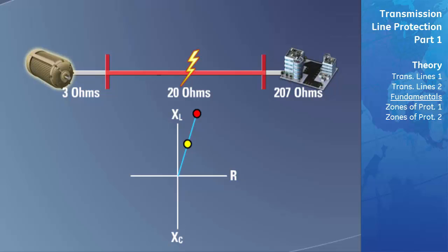Since the distance that the relay measures to the fault is actually closer than the length of the entire transmission line, the fault is in the zone that the relay is protecting. Therefore, the relay will send a signal to trip the breaker to clear the fault. The trip of a transmission line breaker normally initiates an auto-recloser sequence that works in conjunction with the synchro check function. The auto-recloser and synchro check functions are covered in detail in the distribution section of the CD.